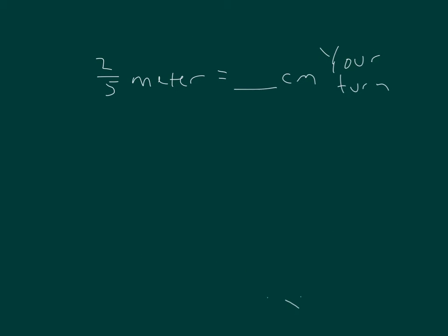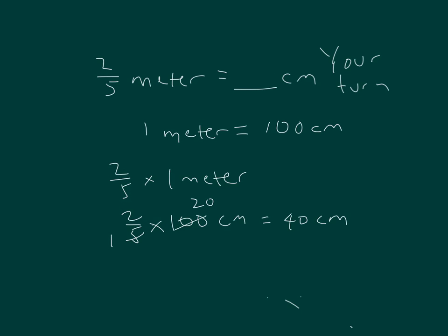Use the fact that one meter equals 100 centimeters to help you. Pause the video while you do your work. Two-fifths times one meter. Two-fifths times 100 centimeters. Two times 20 equals 40 centimeters. I divided by 5 in the numerator and denominator to help me there. Two-fifths of a meter is equal to 40 centimeters.